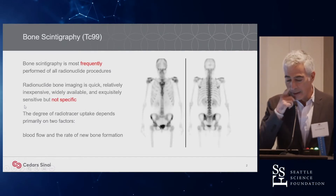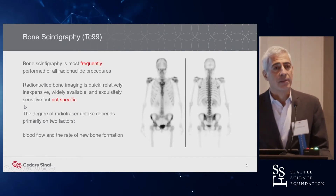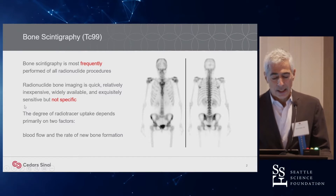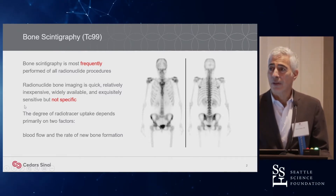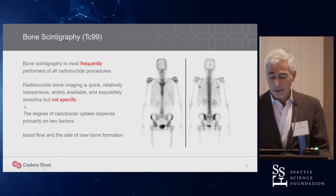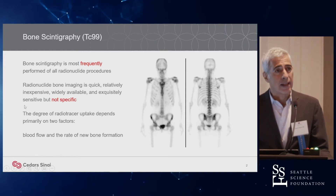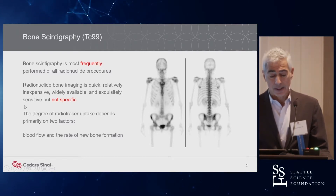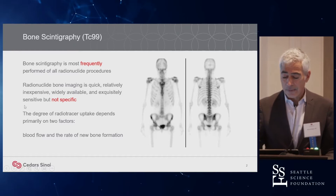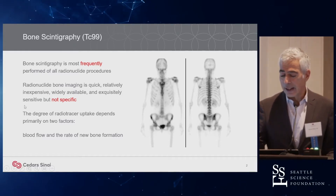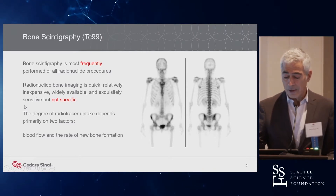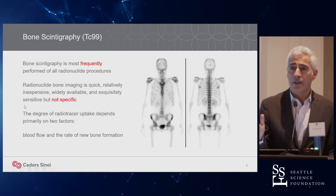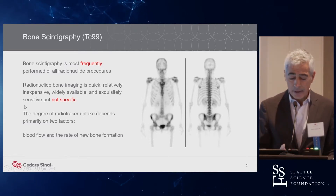Bone scans have been with us forever, for decades. It's the basic bread-and-butter nuclear imaging — planar bone scans — a quick way to evaluate. It's very sensitive, but not specific. When you look at these images, you can have an idea of where the lesions are, but you're not sure about it. The uptake is basically dependent on two things: blood flow and the rate of new bone formation.